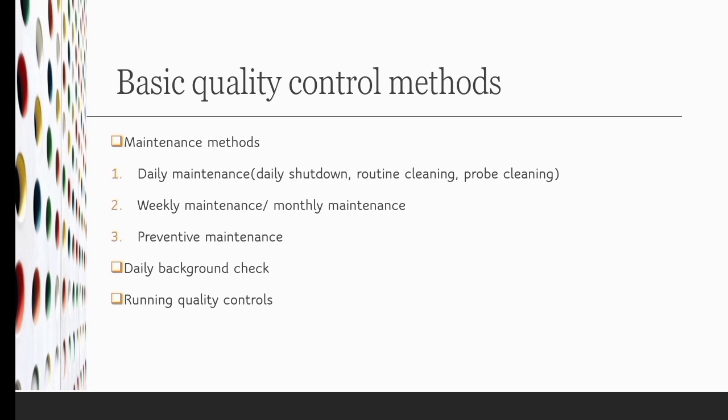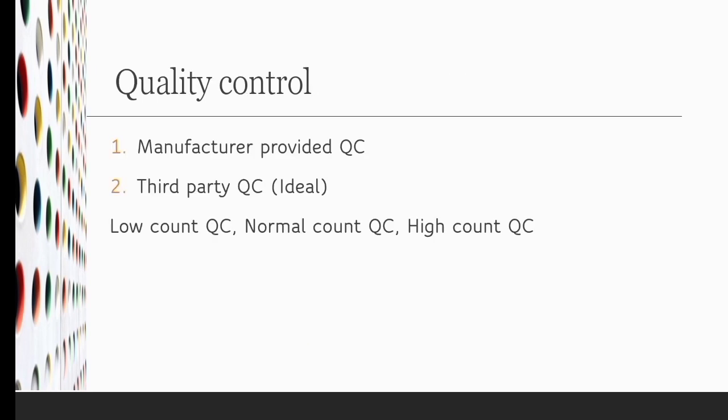The third quality control mechanism is running the quality control. Two types of quality controls are available commercially. First is manufacturer provided, and the second is third party quality control. According to the machine you are operating or purchasing, the company will provide the quality control sera for that analyzer, like low count quality control, high count quality control, and normal quality control. They also provide a certain range for that particular quality control. While you are performing the controls on a daily basis, you can check your analyzer performance by implementing the Westgard QC rules.